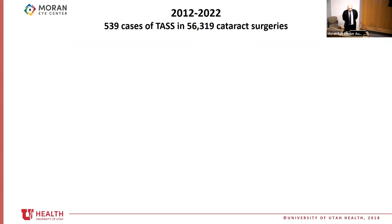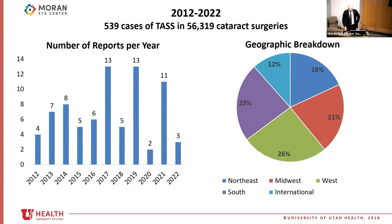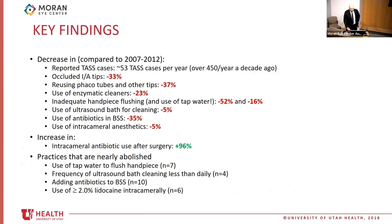My research builds on this and directly compares the 2012–2022 period to the 2007–2012 period. There are significantly fewer TASS cases — over 500 cases across 56,000 cataract surgeries in this time span. Reports come in at a median of around five per year. Geographically, cases are fairly equally distributed across the U.S., with a good chunk of international facilities also submitting reports.